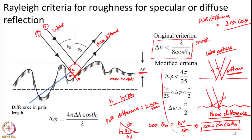Later on, people decided a surface need not be only smooth or rough — there can be an intermediate nature. So the Rayleigh criteria was modified to include three classes: smooth surface, intermediate surface, and rough surface. The conditions for these three surfaces are: if delta phi is less than pi by 25 the surface is smooth; if it is between pi by 25 and pi by 2 the surface is intermediate; if delta phi is greater than pi by 2 the surface is rough. This is the Rayleigh criteria to characterize whether a surface is smooth or rough.